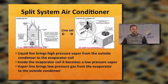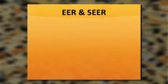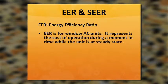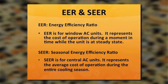Air conditioners are measured by two terms: EER and SEER. Energy Efficiency Ratio (EER) is for window air conditioner units — it represents the cost of operation during a moment in time at steady state. Seasonal Energy Efficiency Ratio (SEER) is for central air conditioner units — it represents the average cost of operation over the entire cooling season.